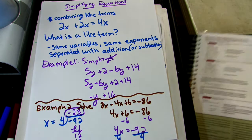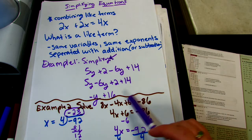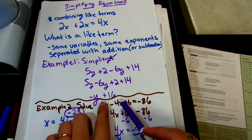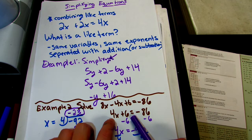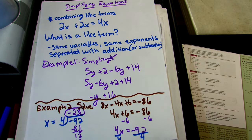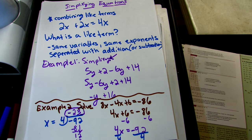Now that we've gone over combining like terms, we can see how combining like terms made this problem, which was long, into just a simple two-step problem — which is what we like. Sometimes, before we can combine like terms, we have these little things called parentheses. And remember, to take care of the parentheses, use the distributive property.